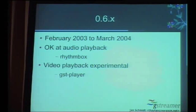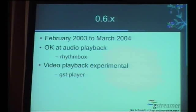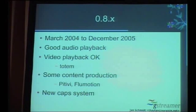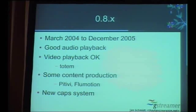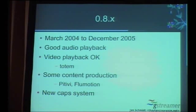The 0.6 series of releases in 2003-2004 is the point at which GStreamer became useful for audio playback—it's when Rhythmbox was first written. At that point, video playback was an experimental, unreliable feature where you'd frequently get synchronization losses if you paused and unpaused a video, which stayed true for 0.8 as well. By 0.8, GStreamer was really good at audio playback, but video was still a bit crashy and unreliable. Totem started having a GStreamer back end at that point, and a few content production applications started appearing—PTV being one many had tried and walked away from, as it was still a work in progress.